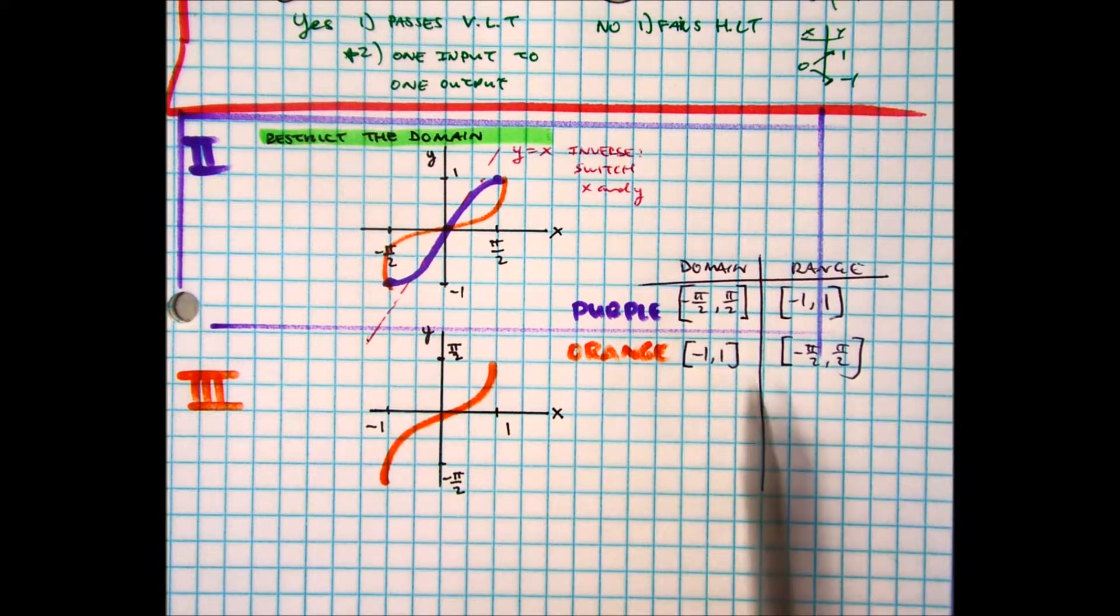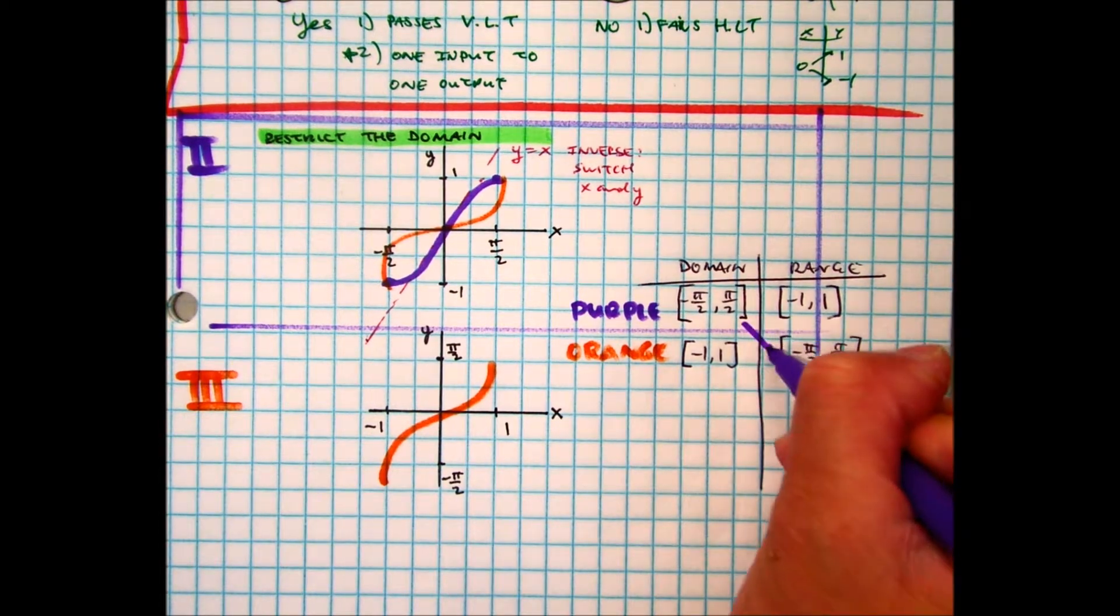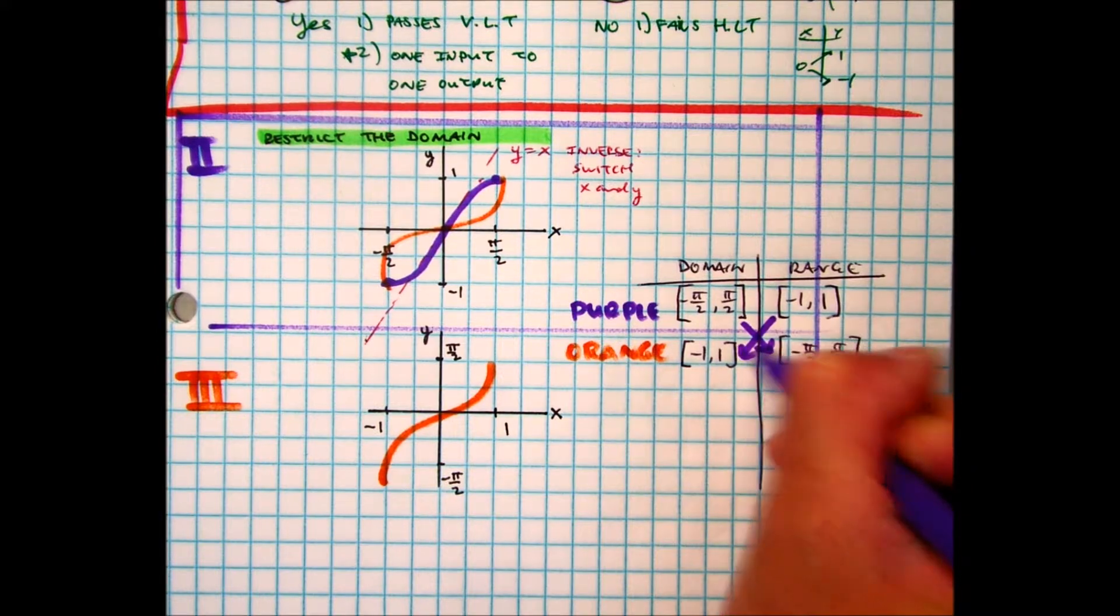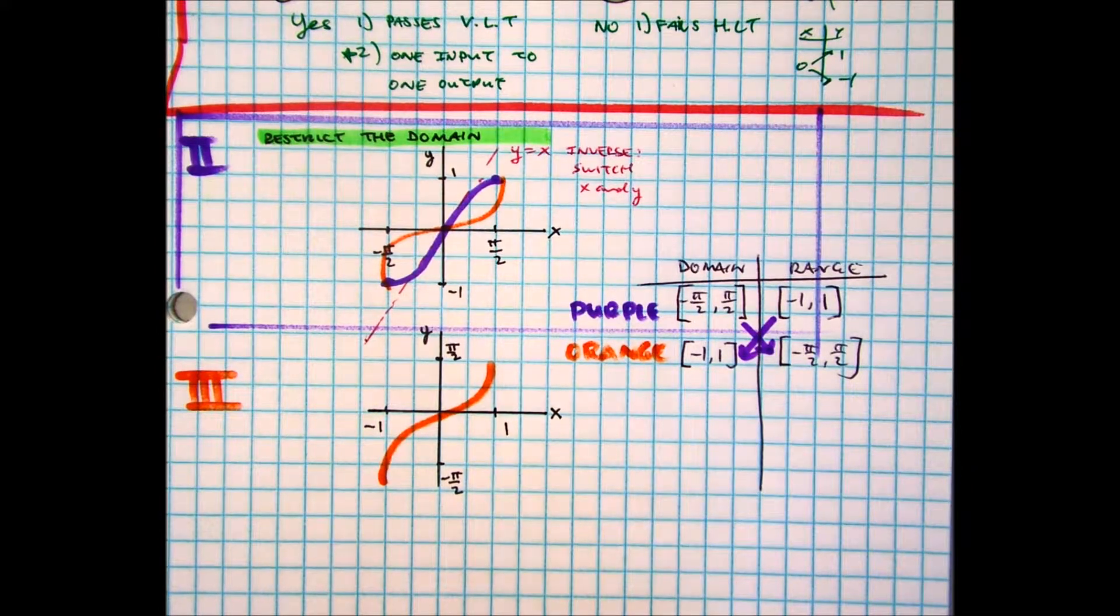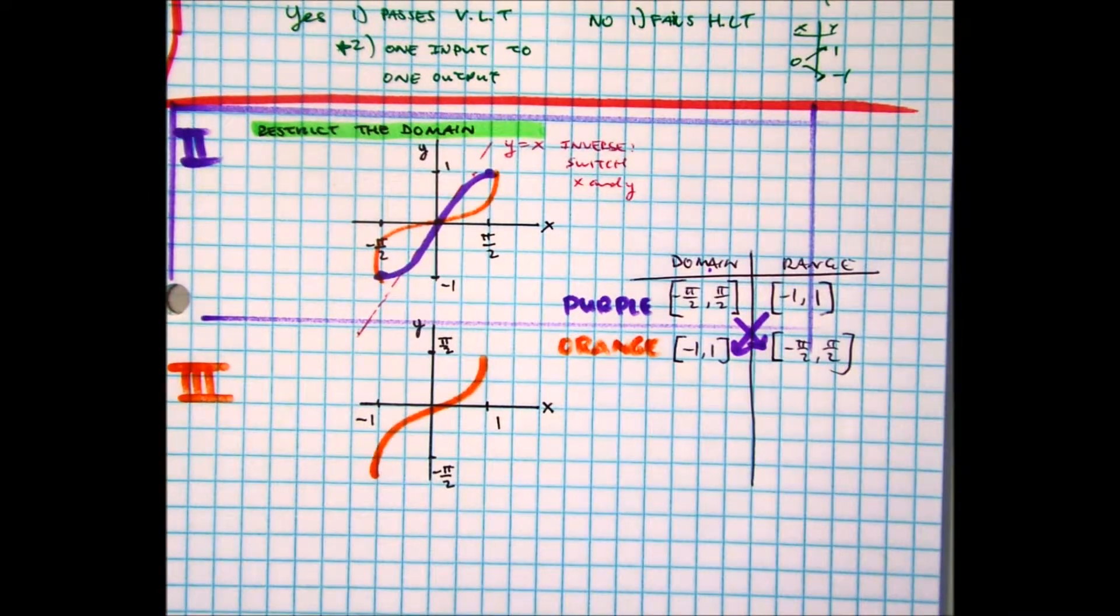Class, what did you notice between the purple and orange? What switched? Ah, the domain and the range. Switched. Does that make sense? Think about that. What's another name for the domain? The X became the Y. And the Y became the X.